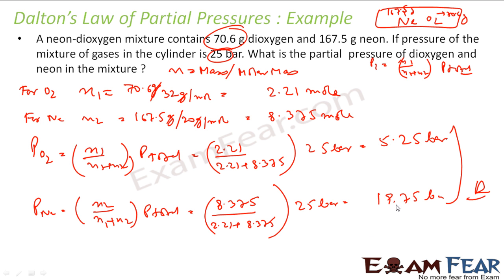Instead of solving this, what you could have done was subtract total pressure minus pressure by oxygen—that will give me pressure of neon. And that will be nothing but 25 minus 5.25, and that will give me 19.75 bar also. Same thing. So you can use either way.